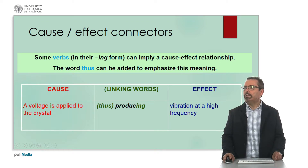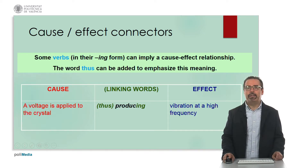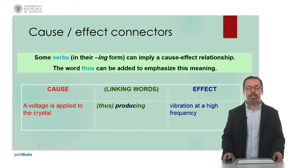We can also use many verbs in the -ing form to imply a cause and effect relationship. And very often in technical English we use the particle thus, introducing the -ing form of the verb. Here we have a typical example: a voltage is applied to the crystal — this is the cause — thus producing, or simply producing, vibration at a high frequency — this is the effect. This is a very important and widely used construction in technical English.